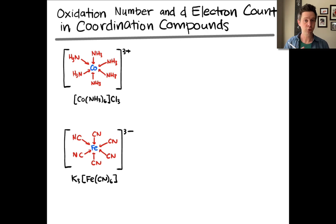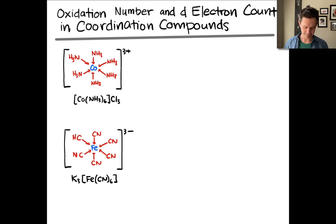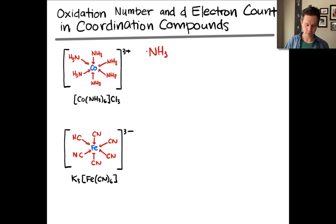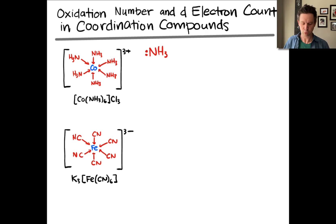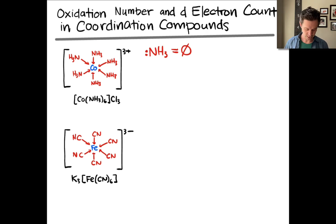We look at the ligands and consider the charge on each one. To do this, think of each dative bond as associated with a lone pair on the ligand donor atom, and draw the Lewis structure of the ligand to assess its formal charge. In the case of NH3, with a lone pair on the nitrogen — this lone pair being the pair of electrons donated to create the dative bond — this molecule is neutral. So the charge on NH3 is zero, meaning each ligand contributes zero to the overall charge of the complex.